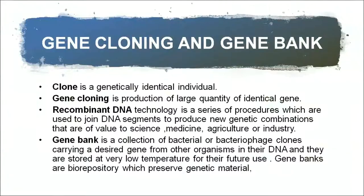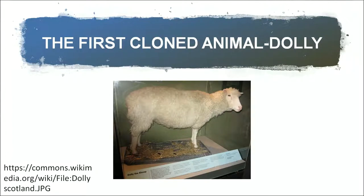What is gene cloning and what are gene banks? A clone is a genetically identical individual — all the genes of the parent and the offspring are the same. Gene cloning is the production of a large quantity of identical individuals. The first cloned animal was Dolly the sheep, which was cloned in Scotland using udder cells.